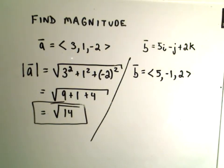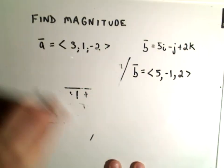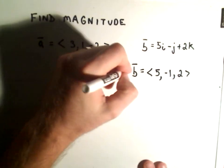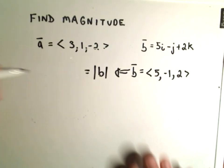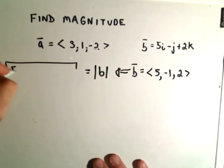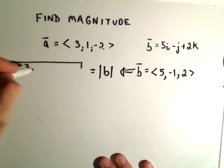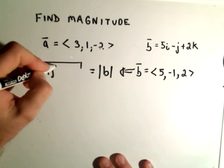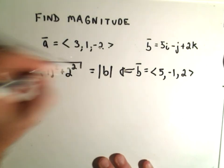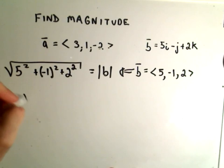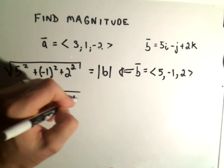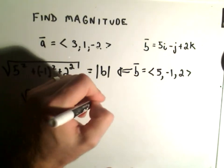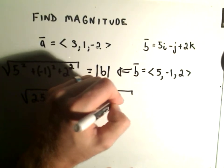If we compute this one - I'm getting a weird glare off my light, so I'll put it over on the left side - the magnitude of this vector would be 5 squared plus negative 1 squared plus 2 squared. That gives us 25 plus 1 plus 4, or equivalently, the square root of 30.